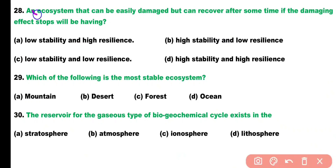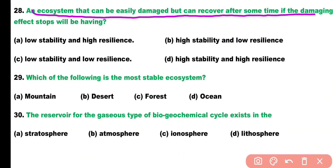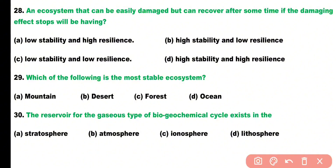Question number twenty-eight. An ecosystem that can be easily damaged but can recover after some time if the damaging effect stops will have: low stability, high resilience, high stability and low resilience, low stability and low resilience, or high stability and high resilience? Correct answer is option A. Such an ecosystem will have low stability as well as high resilience.